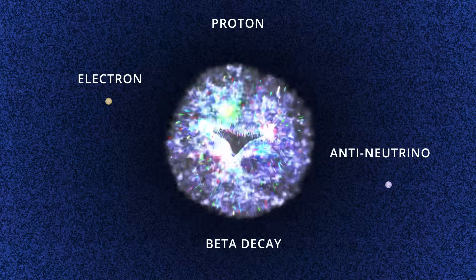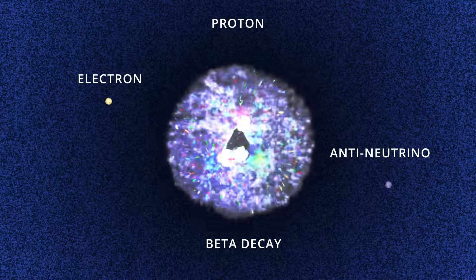This process is called beta decay, as an electron or beta particle gets emitted.